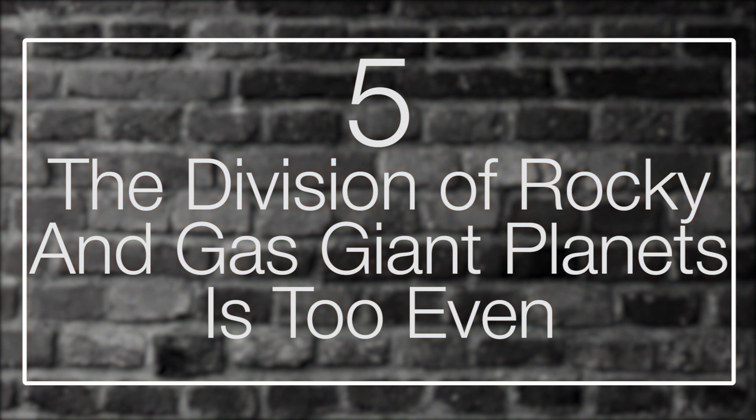5. The Division of Rocky and Gas Giant Planets Is Too Even. One of the most common elements of the orbits of the 4,000 exoplanets discovered so far is that they aren't uniform. Far from it, in fact. Many of them have intermingling large and small-bodied worlds. Imagine a complicated dance between hot Jupiters, distant Jovian class worlds and super-Earths, and you get a basic idea of the chaos that the majority of the systems in our galaxy experience.